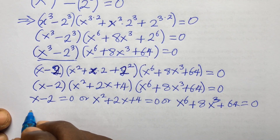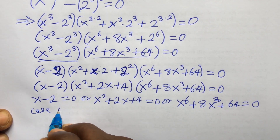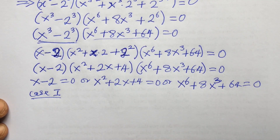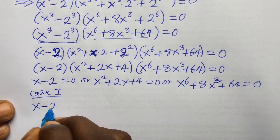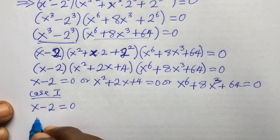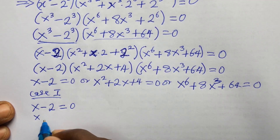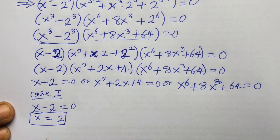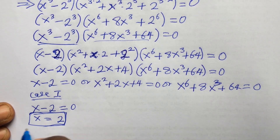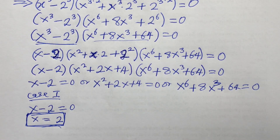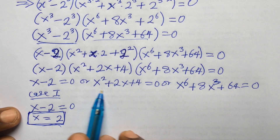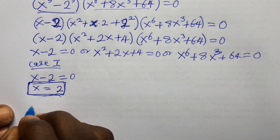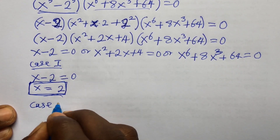Case 1: x minus 2 equals zero. Collecting like terms, we have x equal to 2. This is the first value of x.